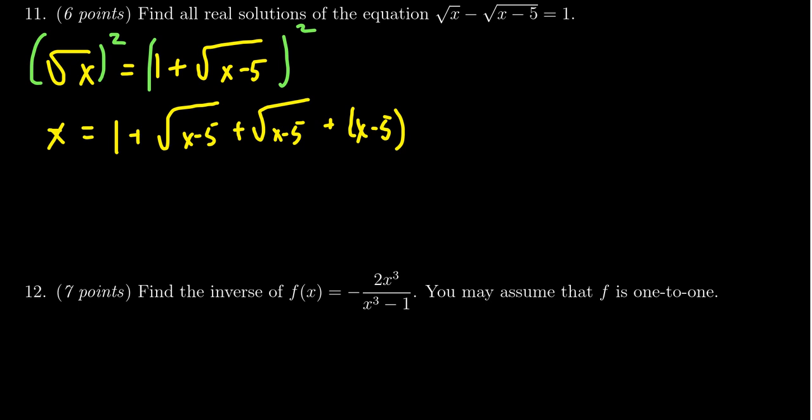Let's combine some like terms. We have x is equal to, well, you have 1 minus 5, so that's a negative 4. So you have x minus 4 there. And then you have 2 times the square root of x minus 5.